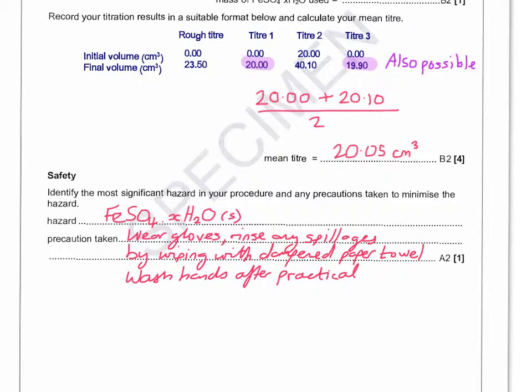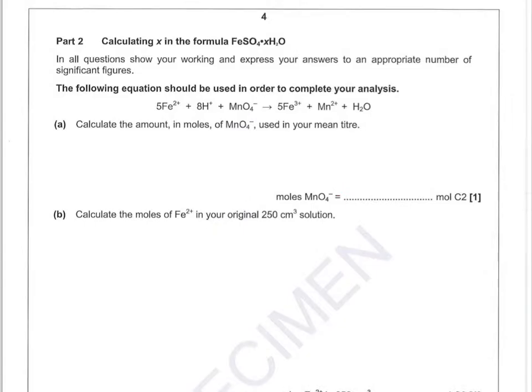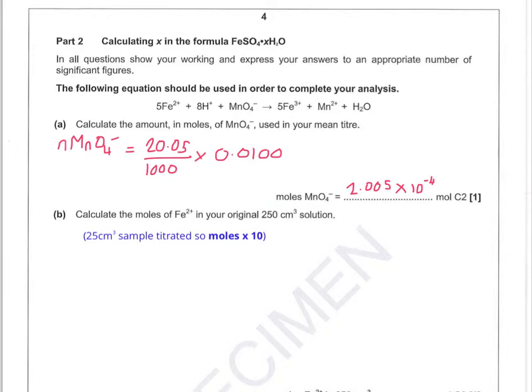So let's move on to the next part. In this part I'm going to use the results that I got. So my mean titer was 20.05 centimeters cubed. So using number of moles equals concentration times volume, that gives us 2.005 times 10 to the minus 4. So taking the fact that 25 centimeters cubed sample is titrated, I multiply the number of moles that I've got there times 10.